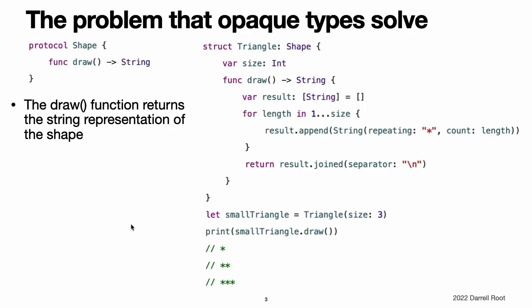The Problem That Opaque Types Solve. For example, suppose you are writing a module that draws ASCII art shapes. The basic characteristic of an ASCII art shape is a draw function that returns the string representation of that shape, which you can use as the requirement for the shape protocol.